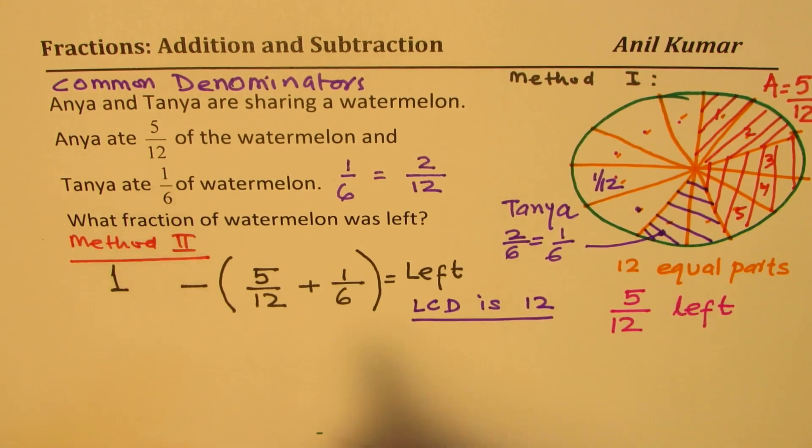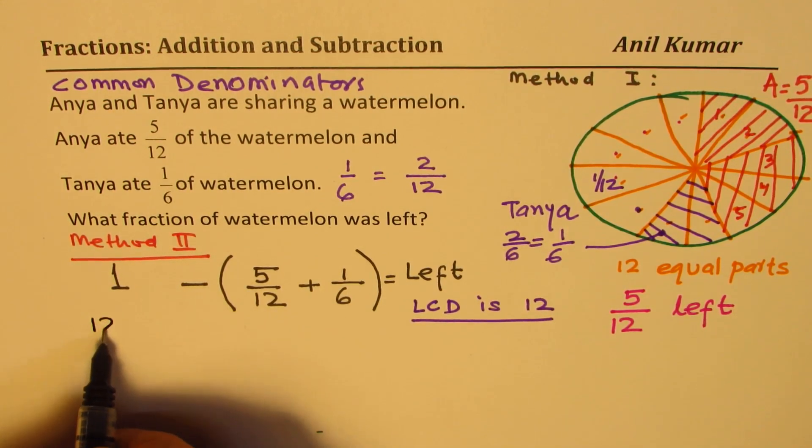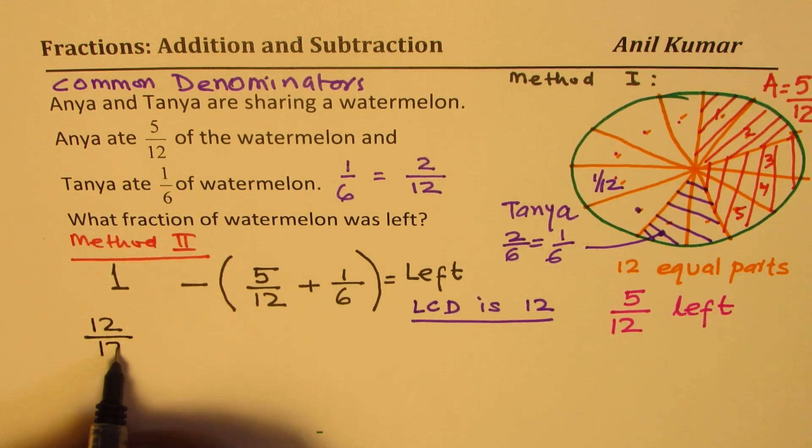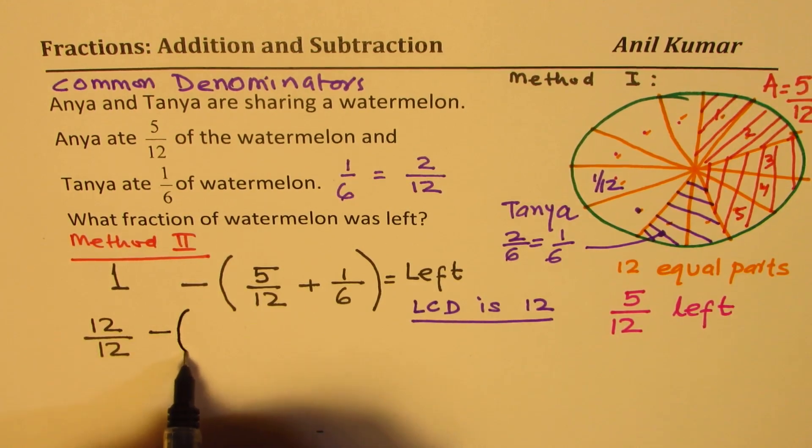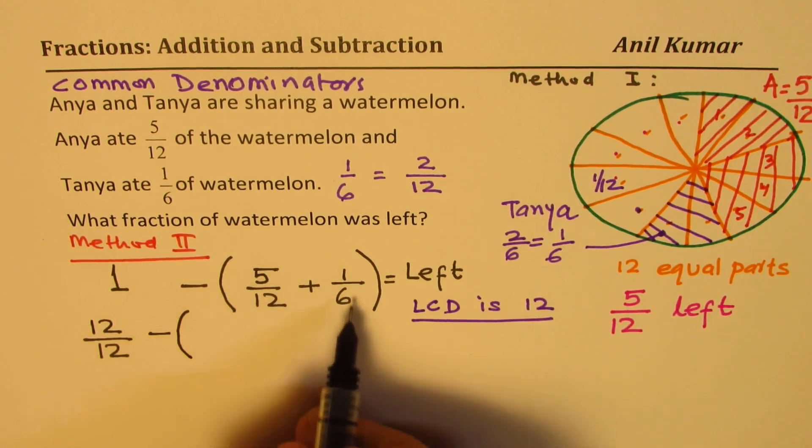So 1 could be written as 12 over 12. Do you see that? 12 over 12 is 1. Minus. Now within this bracket, which was eaten.